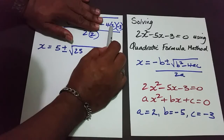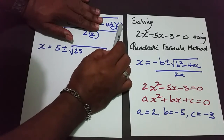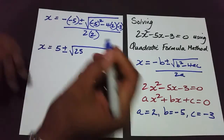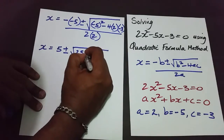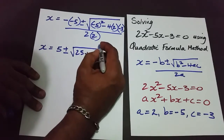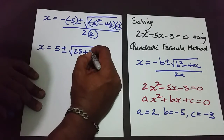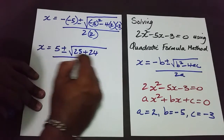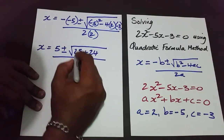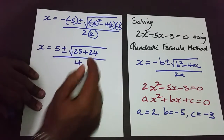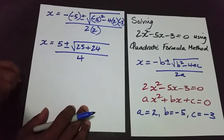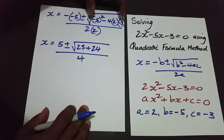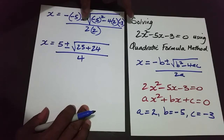Negative 4 times 2 is negative 8, and negative 8 times negative 3 is positive 24, all over 2 times 2 is 4. Take your time and work carefully — avoid making errors inside here, because this is normally where mistakes happen.